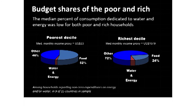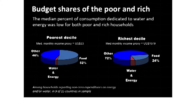This next slide shows budget shares of the rich and poor for different categories of expenditure. Food is the biggest category of expenditure. From the LSMS data, water and energy expenditures are actually quite small as a share of monthly income.